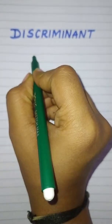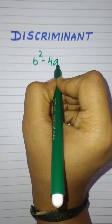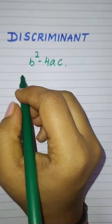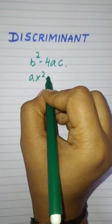Hey viewers, in this video we will learn about the topic discriminant. So what is discriminant? It is b squared minus 4ac in a quadratic equation, ax squared plus bx plus c.